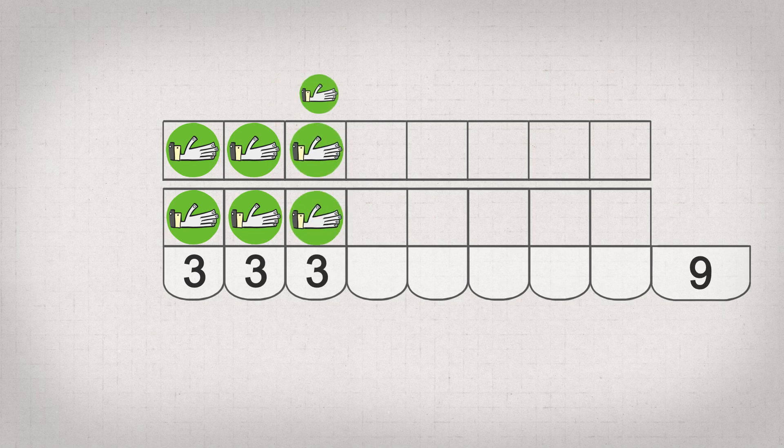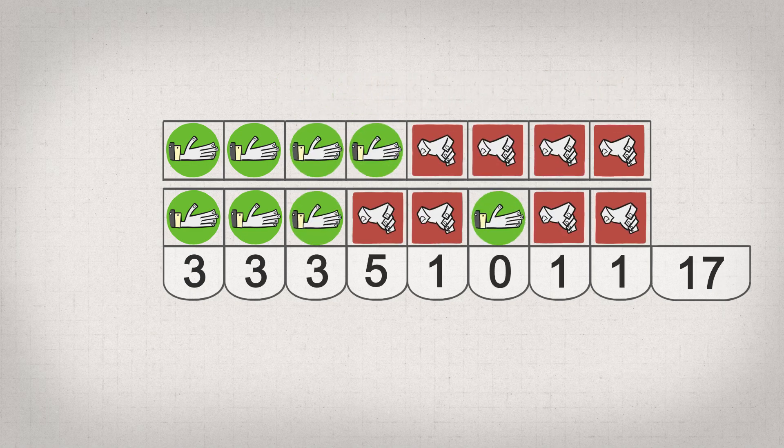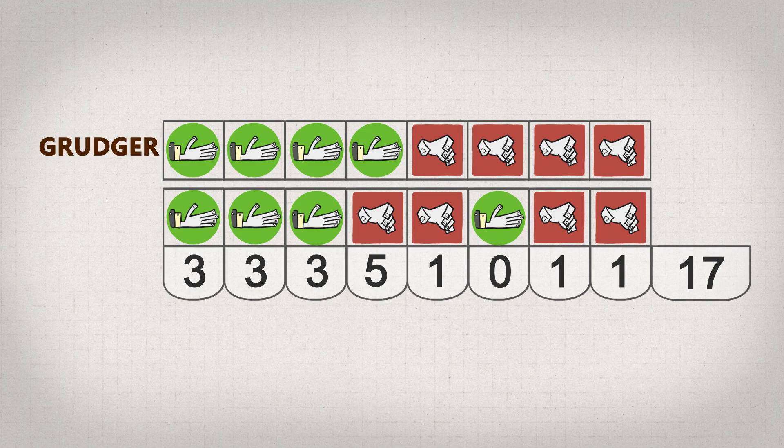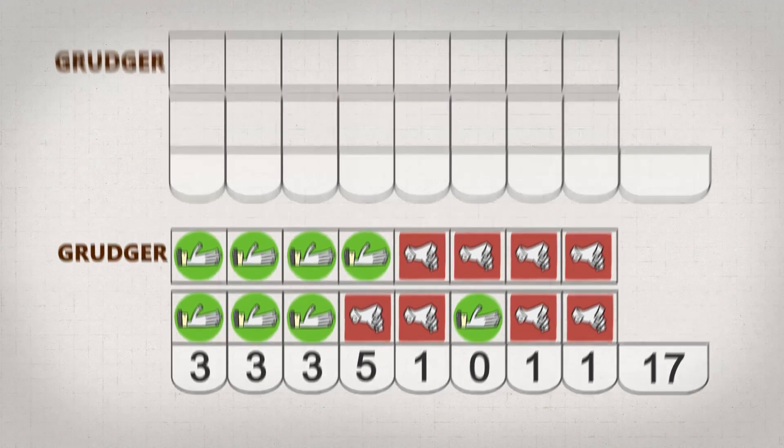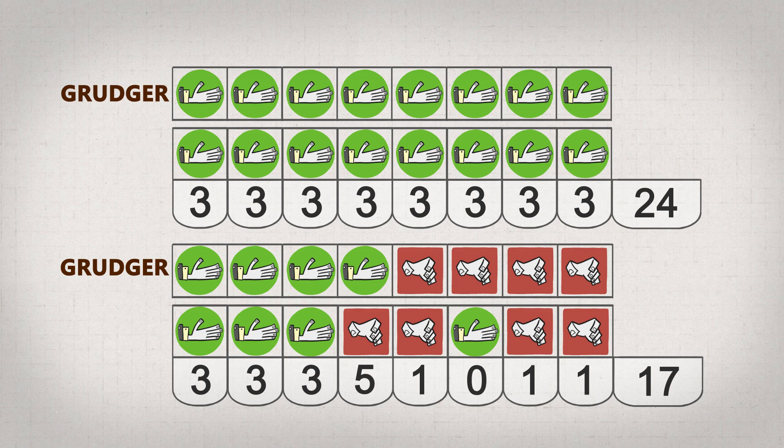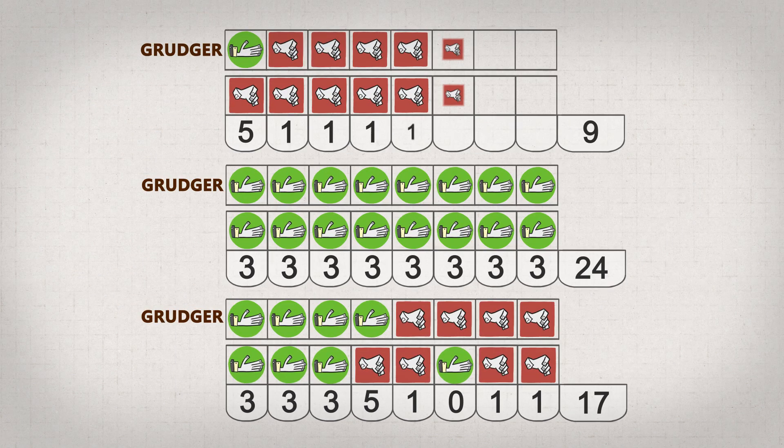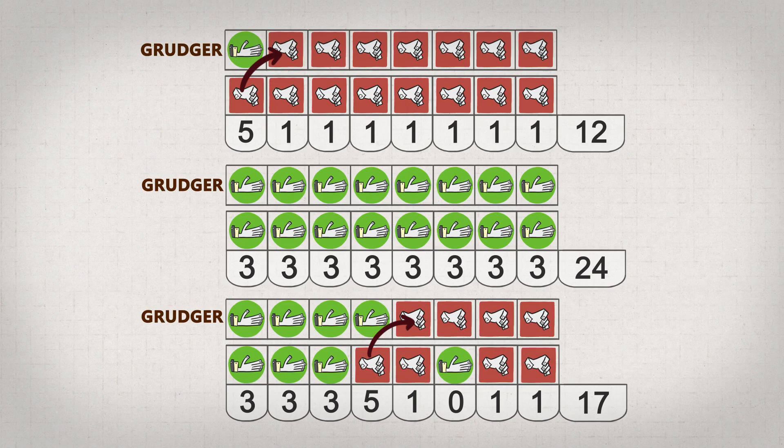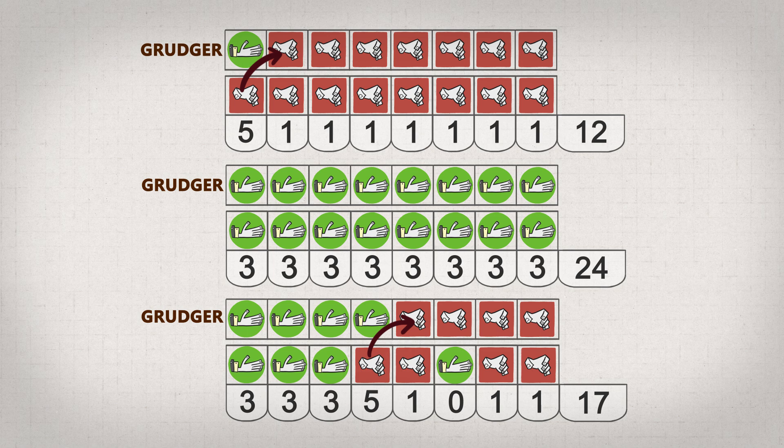But if what a player picks changes depending on what the other player did. For example, this player starts off cooperating and always cooperates, unless their opponent defects. Then they switch to defecting and defect no matter what. You know, it sort of gets pissed off, we'll call it grudger. Any strategy that started off cooperating with grudger, or always cooperated, would have gotten a higher score than always defect. Because here defecting can have consequences. With multiple games, there is an opportunity to influence the other player for future games. Always defect isn't the best strategy anymore.